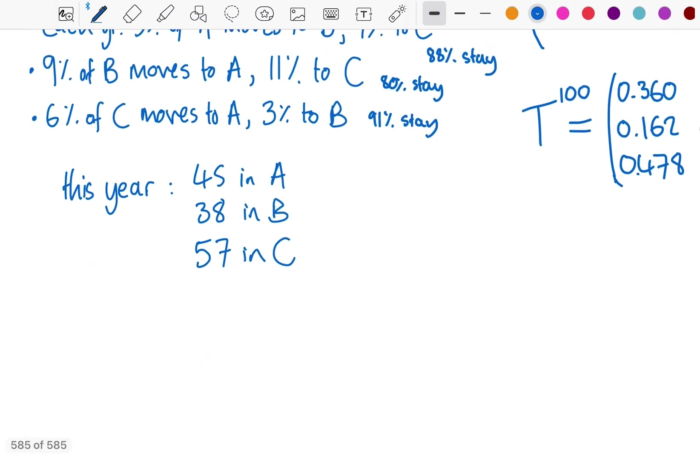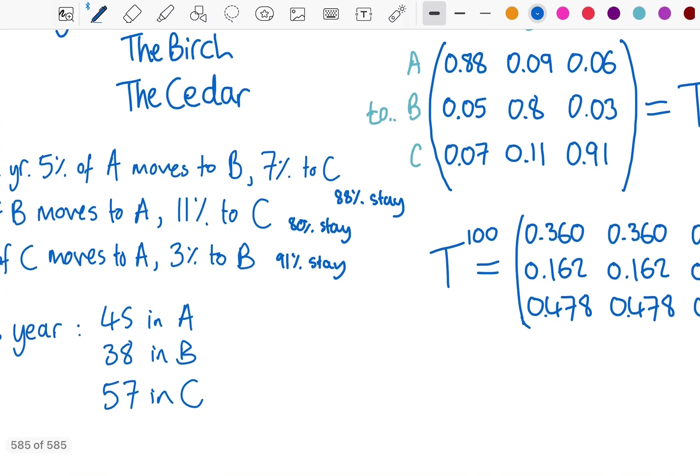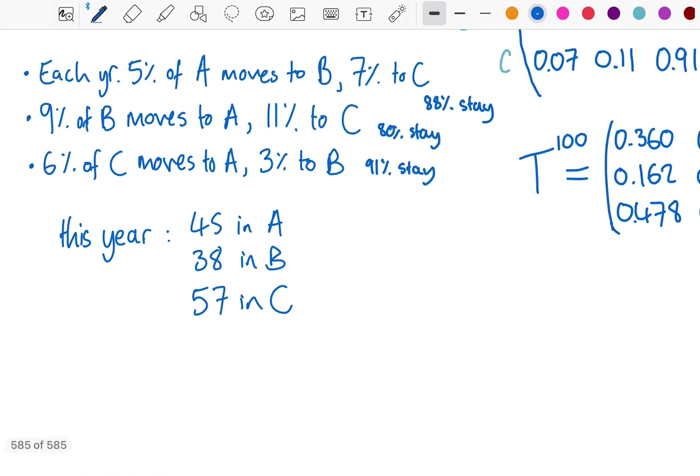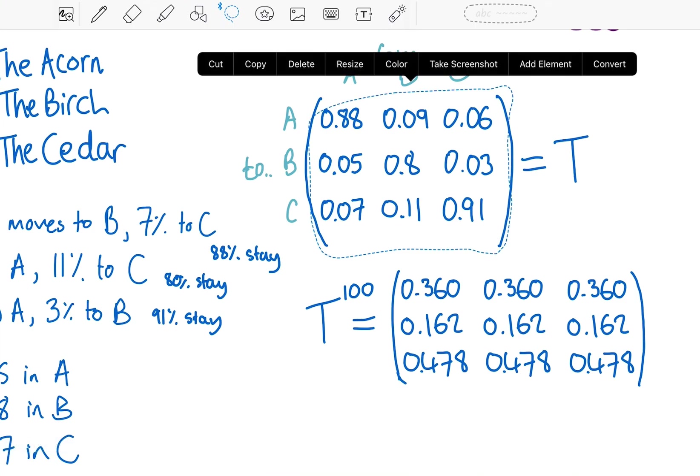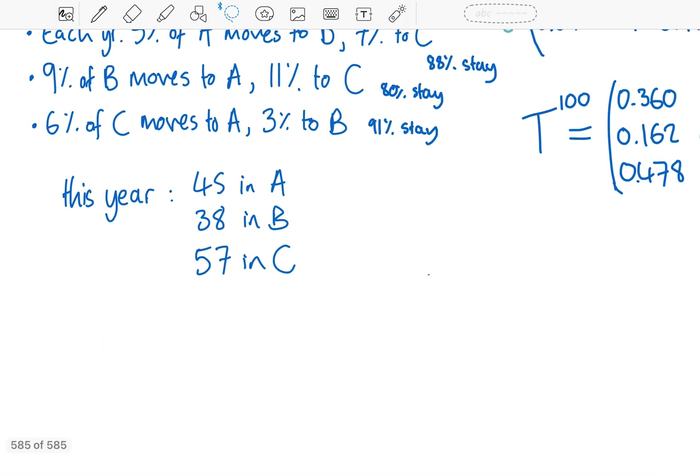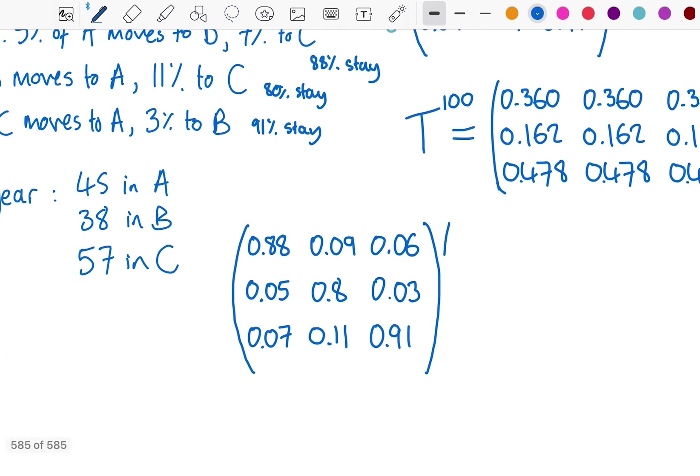Now the other way that they can kind of present these questions is to give it not in terms of proportions, but in terms of actual numbers of people or objects or things, such as this situation here, where this year 45 teachers are in A, 38 in B, 57 in C.